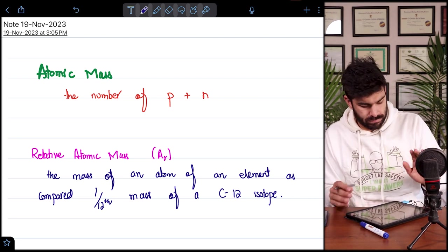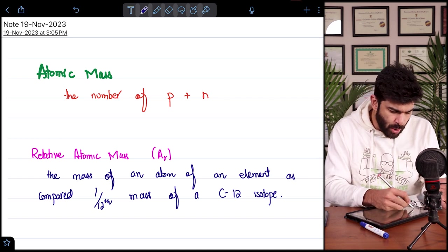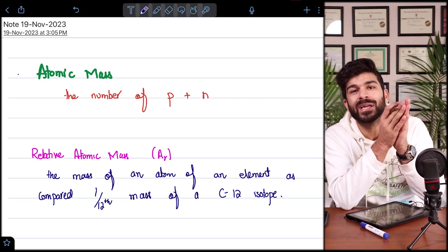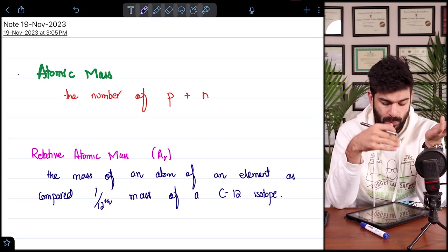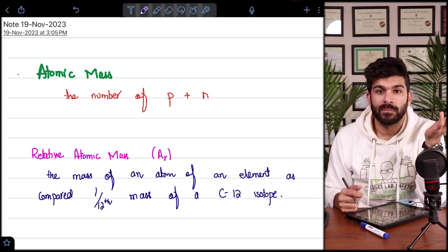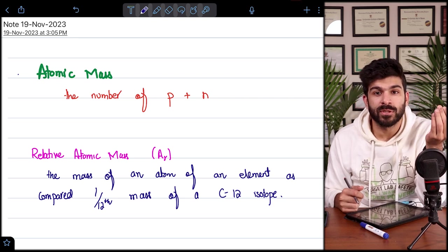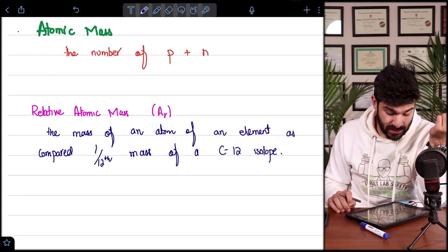Now we all know that carbon have three isotopes, carbon 12, carbon 13 and carbon 14, but we take carbon 12 as a standard. So if this is the same thing, you all know that from where will you get the atomic mass value? From the periodic table.